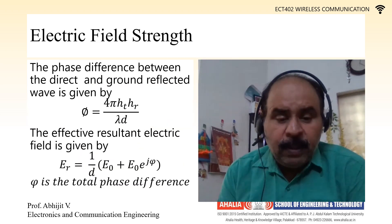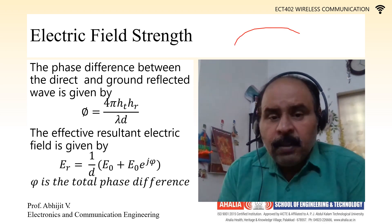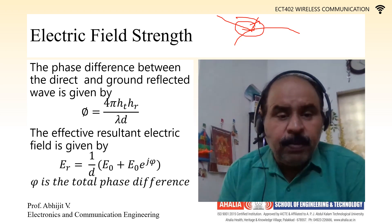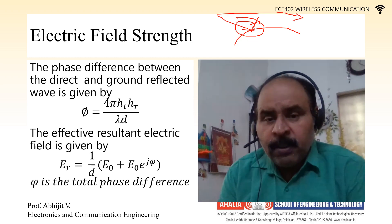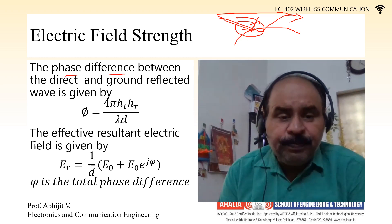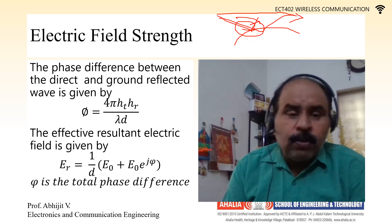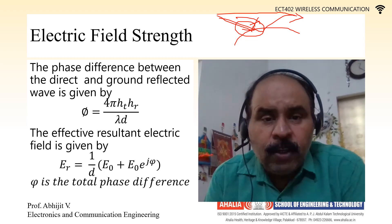The phase difference between the direct and the ground-reflected wave: once the wave hits the ground it changes its phase. This phase difference is given by phi = 4π·Ht·Hr / (λ·D), where λ is the wavelength of the transmitted wave, D is the distance between the antennas, Ht is the height of the transmitting antenna, and Hr is the height of the receiving antenna.